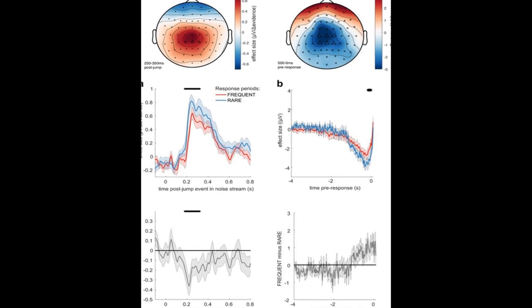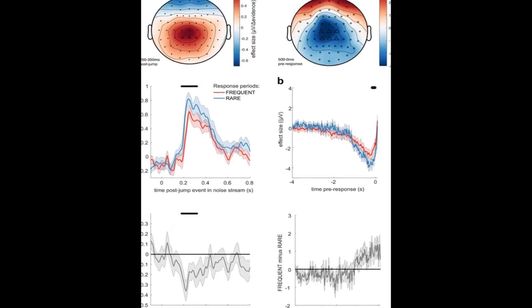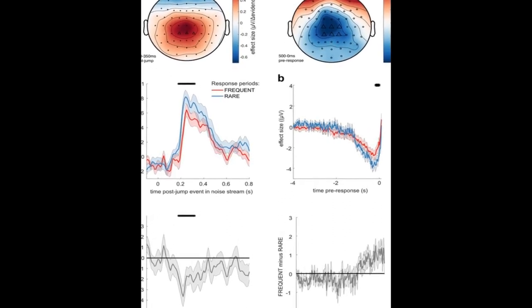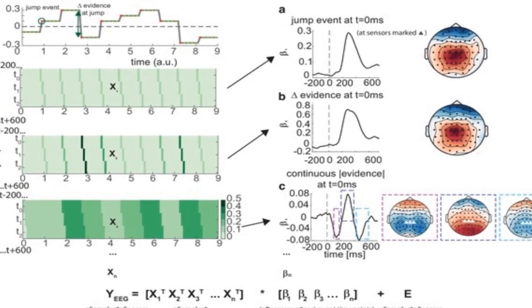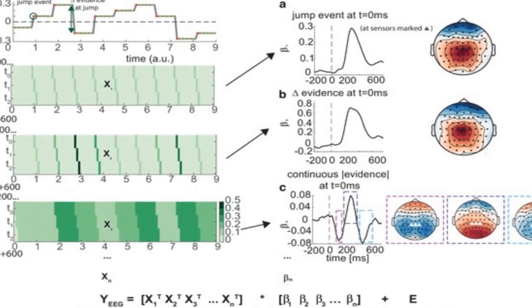A complementary trifasic component over occipitoparietal cortex encodes the sum of recently accumulated sensory evidence, and its magnitude covariates with parameters describing how different individuals integrate sensory evidence over time.